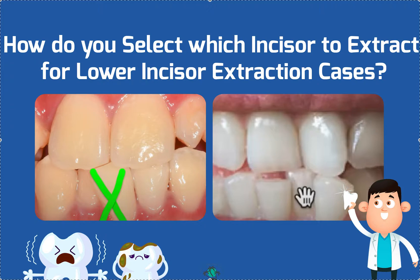Put in your keyword — IPR or lower incisor extraction — and all the videos and content I've made on that will pop up. But specifically, the question today is: how do you select which incisor to extract? There's no right or wrong answer. First thing I look at — if I'm the orthodontist and the patient has a general dentist, I often defer to the general dentist if I'm not sure. We want to pick the tooth with the worst prognosis — if a tooth has a filling, a root canal, wear, root resorption, or some perio, that's going to be our first choice.